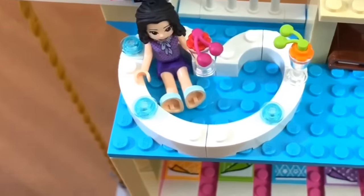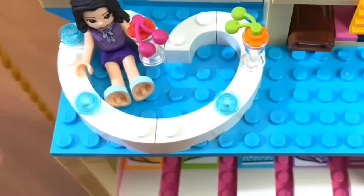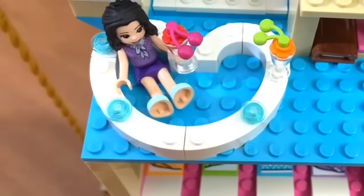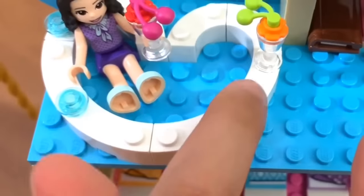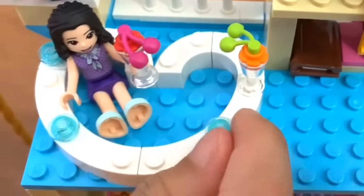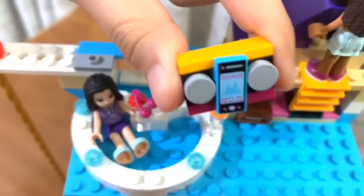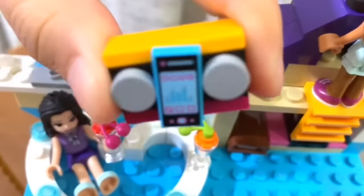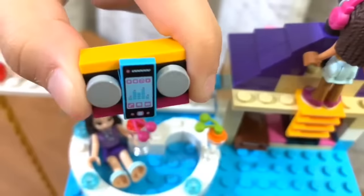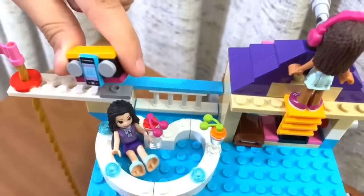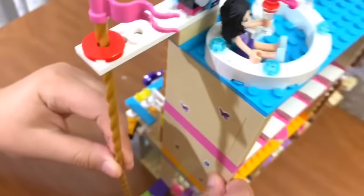Right here we have our heart-shaped hot tub. So right here we have Emma with a small sundae. And here we have some translucent blue pieces. A small juice box. And this is where Andrea's phone is connected, because when she records her music, she can play it.